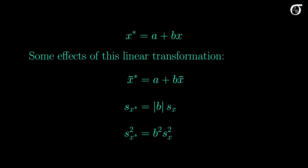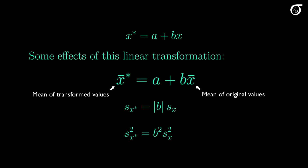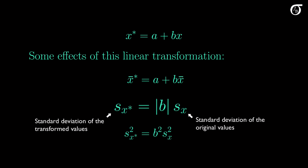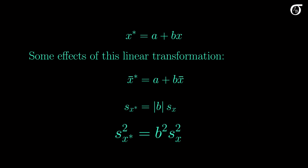Let's summarize what we've learned. If we apply a linear transformation, we can find the new mean by applying that linear transformation to the original mean. The same notion holds for the median — the new median is the transformation applied to the old median. For the new standard deviation, we ignore the additive constant (since it does not affect any measure of variability) and multiply the old standard deviation by the absolute value of the multiplicative constant. The new variance is the square of the multiplicative constant times the old variance.